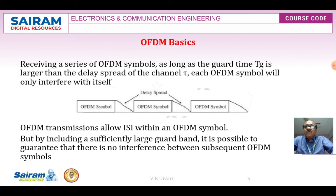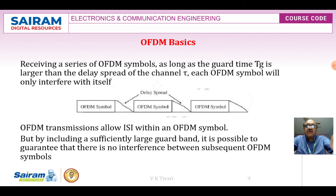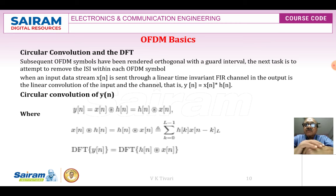OFDM transmission allows ISI within an OFDM symbol, but by including a sufficiently large guard band — far greater than the delay spread — it is possible to guarantee that there is no interference between subsequent OFDM symbols. This ensures ISI-free transmission between symbols. The next concept is circular convolution and the DFT.